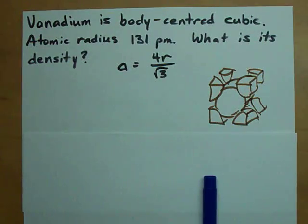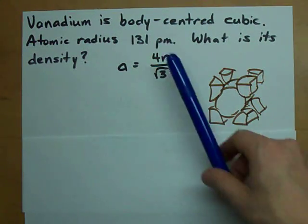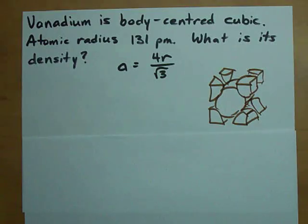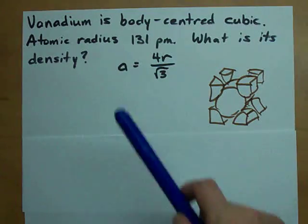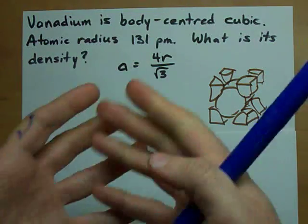Hey guys, if vanadium crystallizes in a body centered cubic unit cell and the atomic radius is 131 picometers, what is its density?